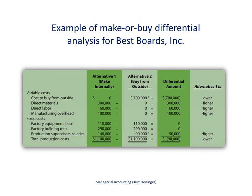Here's the typical format used for a make or buy differential analysis. The company is called Best Boards Inc., and they make wakeboards — boards that people ride while being towed by boats. The decision facing Best Boards is whether to make wakeboards internally, shown in the first column, or to outsource production, shown in the second column. The third column shows the difference between those two alternatives. Everything shown relates to costs for each alternative.